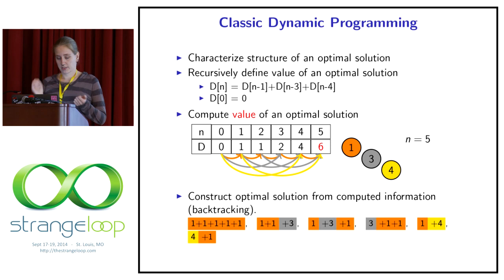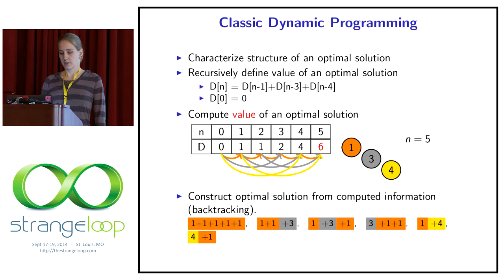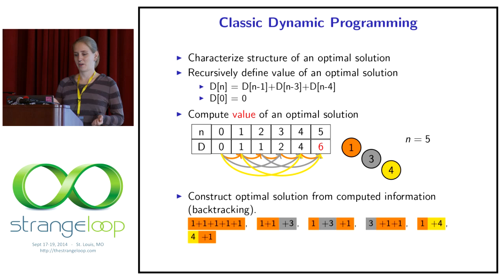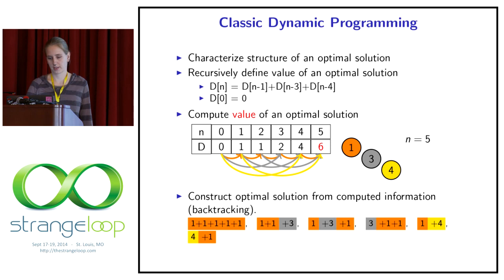So if I want to decompose the number five, my optimal solution would be a sum composed of these values of the coins — one, three, and four — so it's some weighted kind of sum. The second step is to recursively define the value of an optimal solution. We do that with recurrences — equations that have the same term reoccurring on the right side.